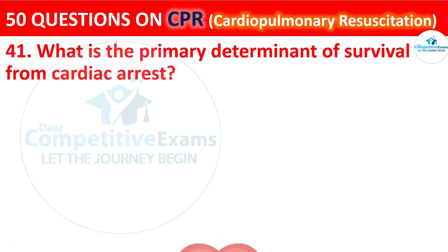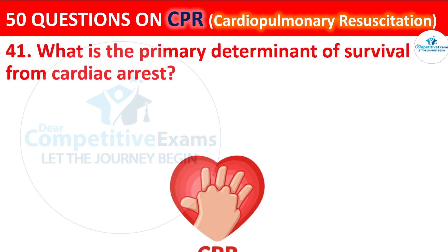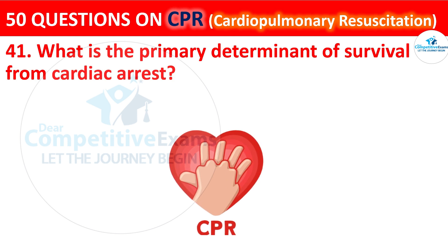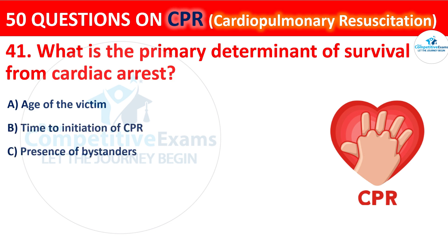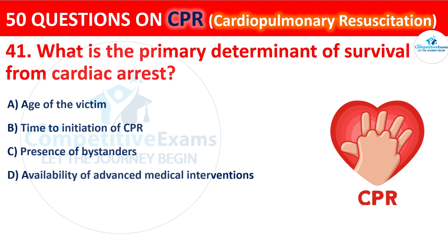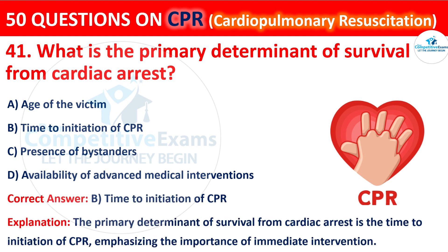Question 41: What is the primary determinant of survival from cardiac arrest? The options are: age of the victim, time to initiation of CPR, presence of bystanders, or availability of advanced medical interventions. The correct answer is B — time to initiation of CPR. The primary determinant of survival from cardiac arrest is the time to initiation of CPR, emphasizing the importance of immediate intervention.